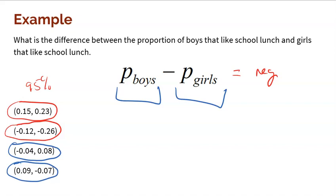The important thing to understand: if the entire interval is positive, that gives you a lot of confidence that boys have a higher proportion liking school lunch than girls. If the entire interval is negative, that gives you strong evidence that the proportion of girls is more than the proportion of boys. When your interval is split — negative on one side, positive on the other — that shows you that either population could be higher than the other. And what you'll notice in both of those bottom intervals is that 0 falls into them, which means there could potentially be no difference between boys and girls.